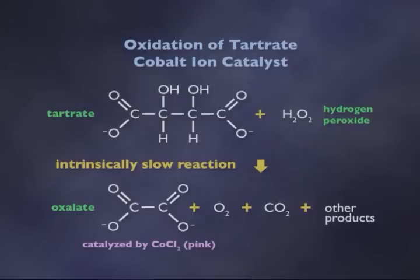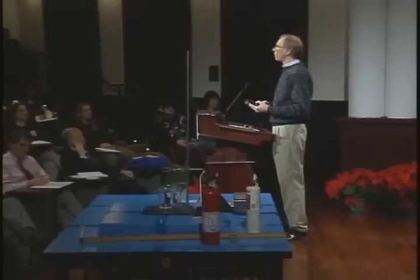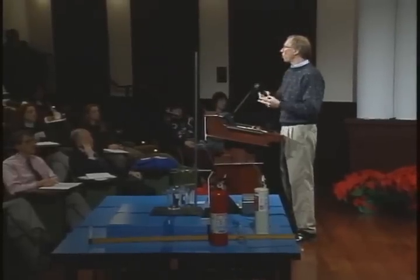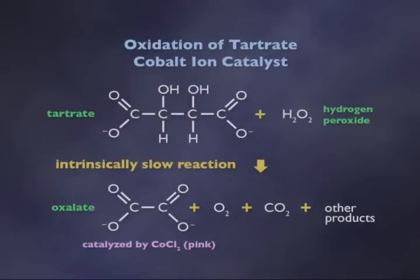They interact with each other. The tartrate wraps itself around the cobalt ion in such a way that it is subject to attack by this species produced by hydrogen peroxide, resulting in its breakdown into molecules of oxalate. But then the products can be released from the cobalt ion. And the cobalt ion, when it's tied up with the tartrate, changes its color to that brownish-greenish color.